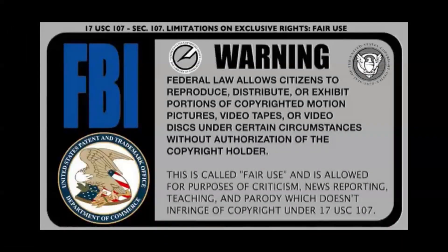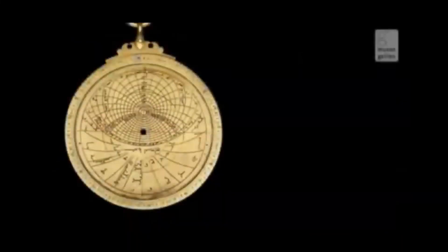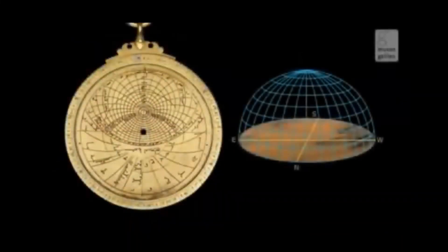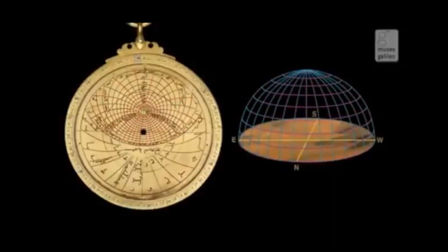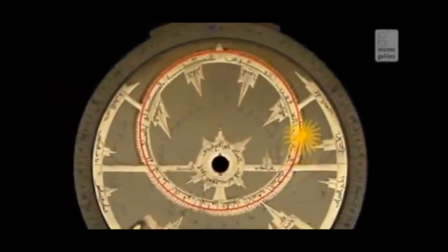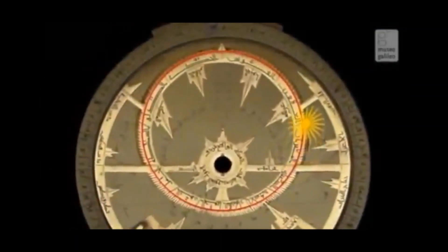The astrolabe is an ancient astronomical computer that has many uses, including, as told to us by Wikipedia, locating and predicting the positions of the sun, moon, planets, and stars, determining local time, giving local latitude and vice versa, surveying, and triangulation. The astrolabe was used during classical antiquity, the Islamic Golden Age, the European Middle Ages, and the Renaissance for all of these purposes.